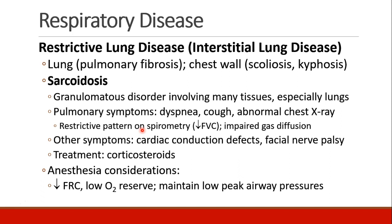Now let's talk about restrictive lung disease or interstitial lung disease. We touched on this before when we looked at flow-volume loops and spirometry. A couple examples of restrictive lung disease would be things that affect the lung itself, like pulmonary fibrosis, and things that affect the ability of the chest wall to expand, like scoliosis or kyphosis. Let's talk about one example of restrictive lung disease, which is called sarcoidosis. This is a granulomatous disorder where you get these granuloma formations in the lung tissues and other tissues too, but it especially affects the lungs.